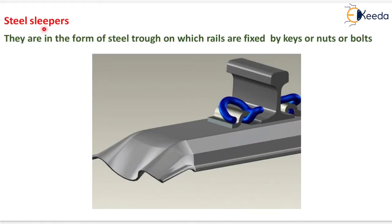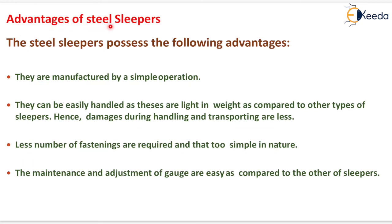The next type is steel sleepers. They are in the form of a steel trough on which rails are fixed by keys or nuts and bolts. Advantages of steel sleepers: they are manufactured by a simple operation, can be easily handled as they are light in weight, so damages during handling and transportation are less. Fewer fastenings are required and these are simple in nature.